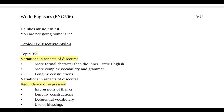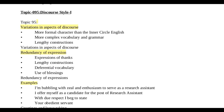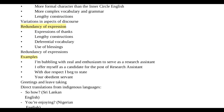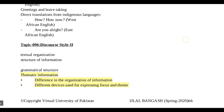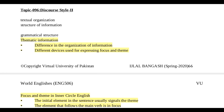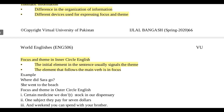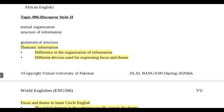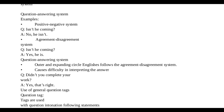Discourse style میں variation aspects of discourse جیسے more formal character than inner circle English، more complex vocabulary and grammar، lengthy construction۔ Redundancy of expression، expression of thanks، differential vocabulary، use of blessings — یہ examples highlight کی گئی ہیں۔ Thematic information میں difference in the organization of information اور different devices used for expressing focus and theme آتا ہے — theme کی بات آئے تو thematic information پر circle کرنا ہے۔ اگر lesson اچھا لگا ہو تو share کیجیے گا۔ اللہ حافظ۔